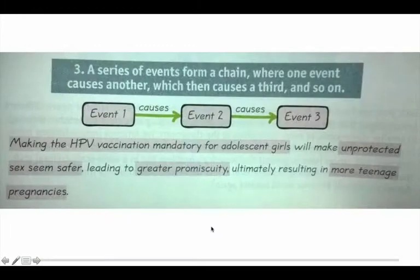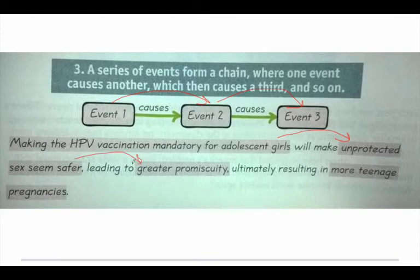Here's an example of a chain. You have to note one particular event which will cause another event, which will cause another, and so on. For instance, making the HPV vaccination mandatory for adolescent girls will make unprotected sex seem safer, lead to greater promiscuity, and ultimately result in more teenage pregnancies. It's your goal to prove that with evidence.